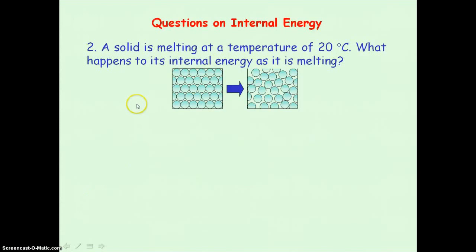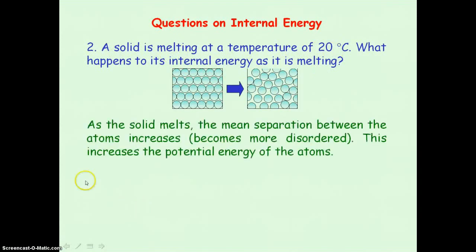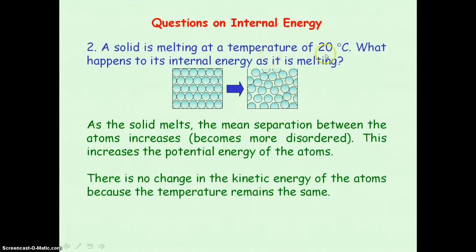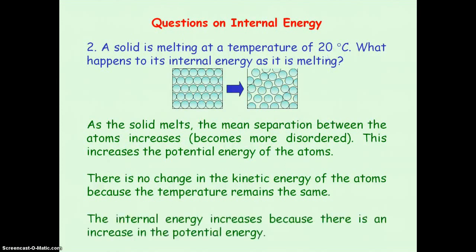The second question is: what happens to the internal energy of a solid when it melts at 20 degrees C? As the solid melts into a liquid, it becomes more disordered and the mean separation between the atoms increases, which increases the potential energy of the atoms. However, as the temperature remains constant at 20 degrees C, the kinetic energy of the atoms remains constant. So the internal energy increases because there has been an increase in the potential energy of the atoms.